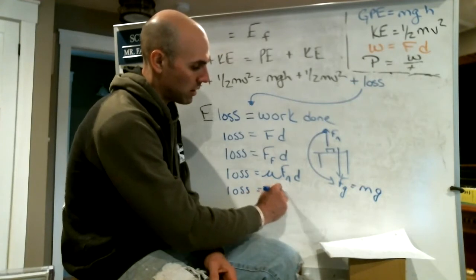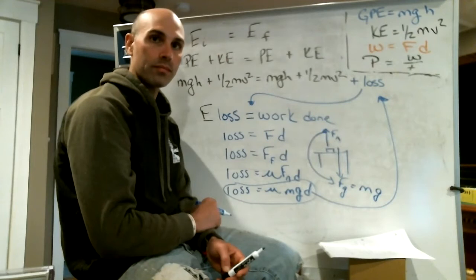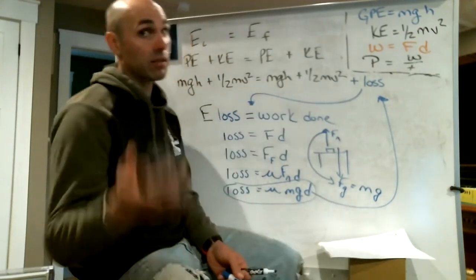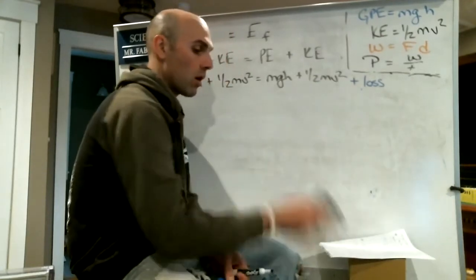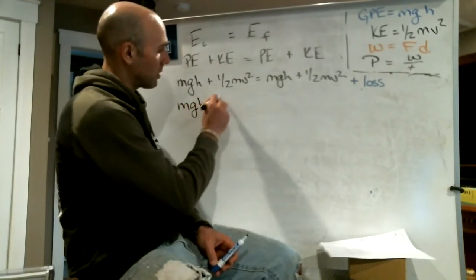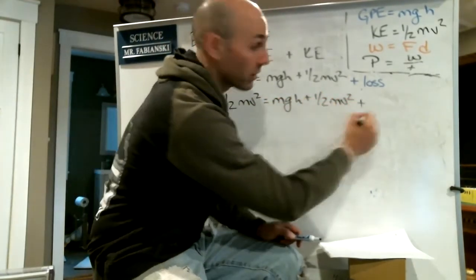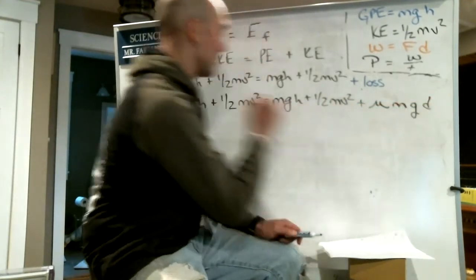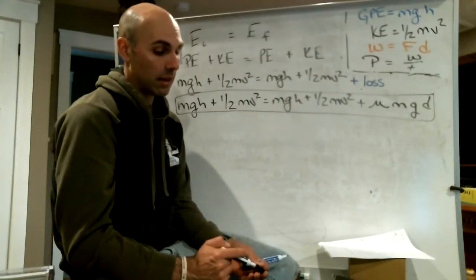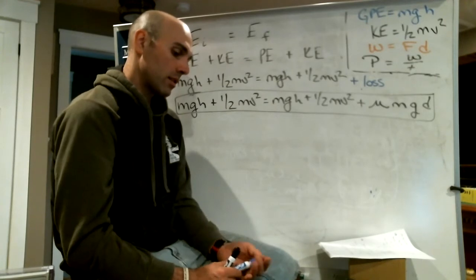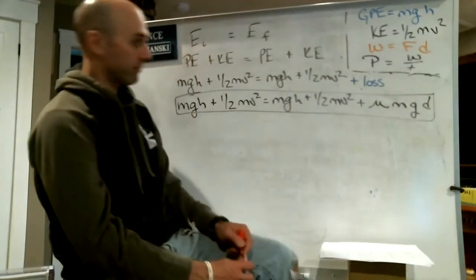Loss equals mu·m·g·d, and this is something we can plug in. So after going through all of that, our full equation is: mgh plus one-half mv squared equals mgh plus one-half mv squared plus mu·m·g·d. This is a very important equation that builds upon what we learned last time.